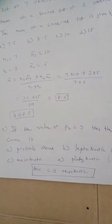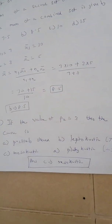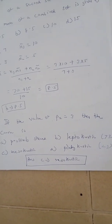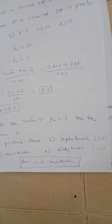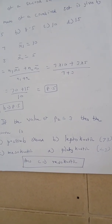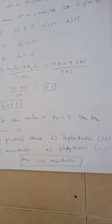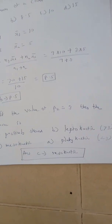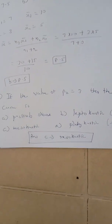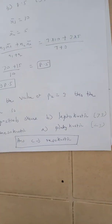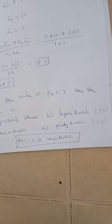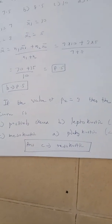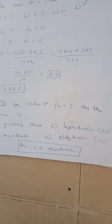Question number 8. If the value of beta 2 is equal to 3, then the curve is known as mesokurtic. The correct answer is option C. If beta 2 is greater than 3, the curve is leptokurtic. If beta 2 is less than 3, the curve is platykurtic.